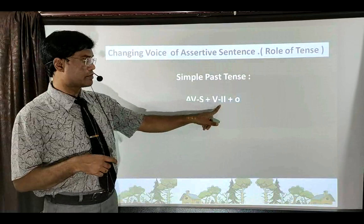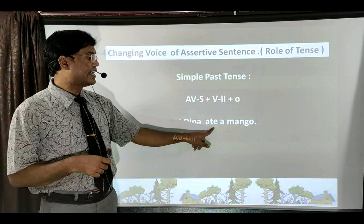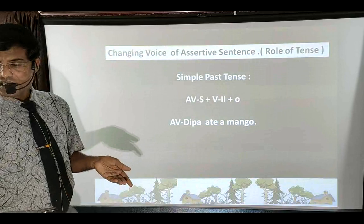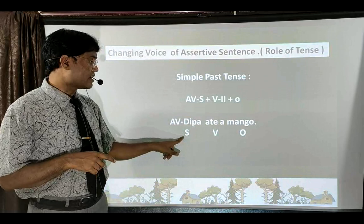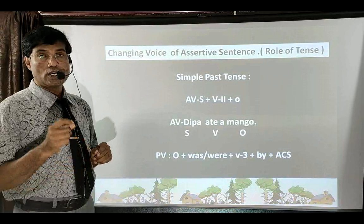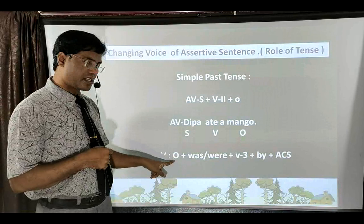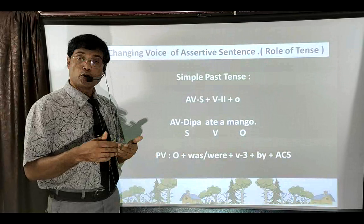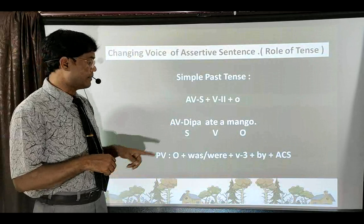Simple Past Tense: active voice formula is Subject + second form of verb + Object. Sentences look like: subject first is 'Deepa', 'ate' is second form of verb, 'a mango' is the object. Identify three things: subject is 'Deepa', verb is 'ate', object is 'a mango'. As soon as tense changes, passive voice formula also changes. In passive voice of Simple Past Tense: object first, then 'was/were' (appropriate to-be form), then third form of verb, then 'by' with the objective case of subject.